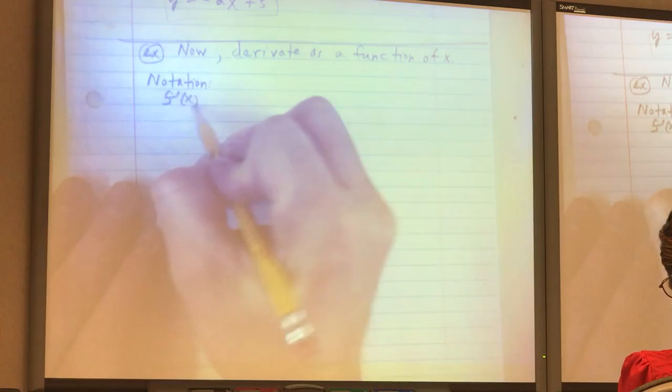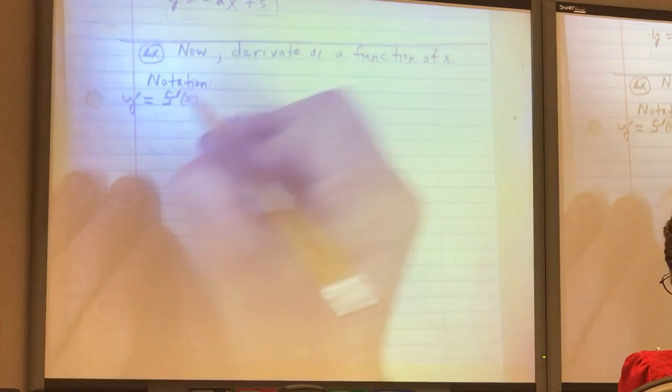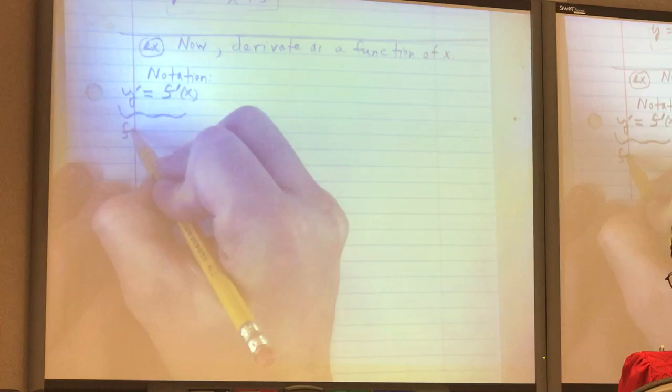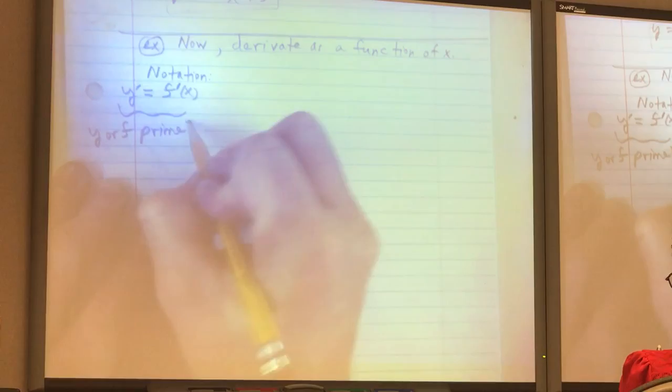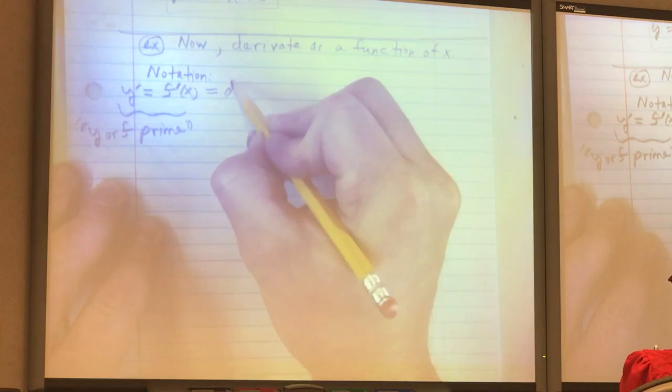You can also write y prime or f prime of x. So if it's an apostrophe, you read it as f prime. So y or f prime. You read it like that. There's another way to write this. So df dx.